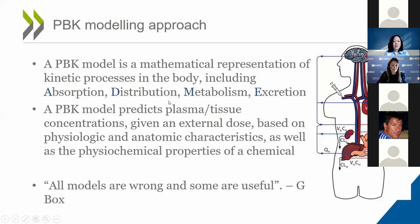A PBK model is a mathematical representation of the kinetic processes in the body, including absorption of the chemical into the body, distribution to different tissues and organs, metabolism to a different moiety, and excretion from the body. A PBK model tracks the amount or concentration in, through, and out of the body, given the physiology of the species being simulated and the physical chemical properties of the chemicals. All models are wrong and some are useful — no model is a perfect representation of the system being simulated, and this concept is particularly important for models developed without any in vivo data.